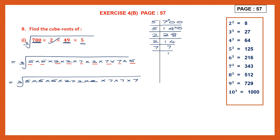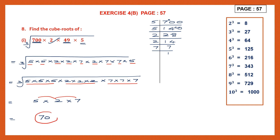Now it's easier to make a triplet. So here let's make a triplet — we have three 5s, three 2s and three 7s. In the next step we take one of each: 5 into 2 into 7. So let's multiply — 5 twos are 10, 10 sevens are 70. So the answer to this question is 70.